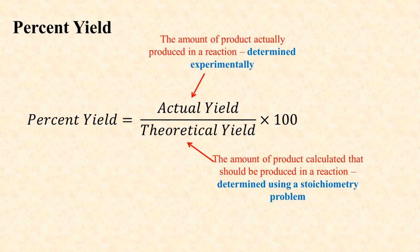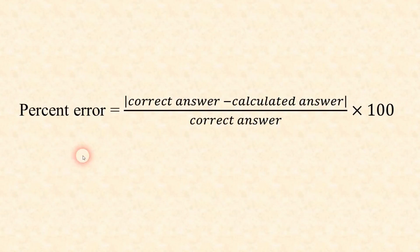Moving on to Unit 4, when we talk about chemical reactions and stoichiometry, you need to know the equation for percent yield, and that's not given to you. For any process, the actual yield divided by the theoretical yield times 100 is equal to its percent yield. A similar equation that could pop up is percent error. If you're analyzing data and need to determine the distance between a calculated answer and the accepted answer, percent error equals the absolute value of the difference between the correct answer and the calculated answer, all over the correct answer times 100. You won't be given this equation on the exam, but you are expected to be able to calculate it.